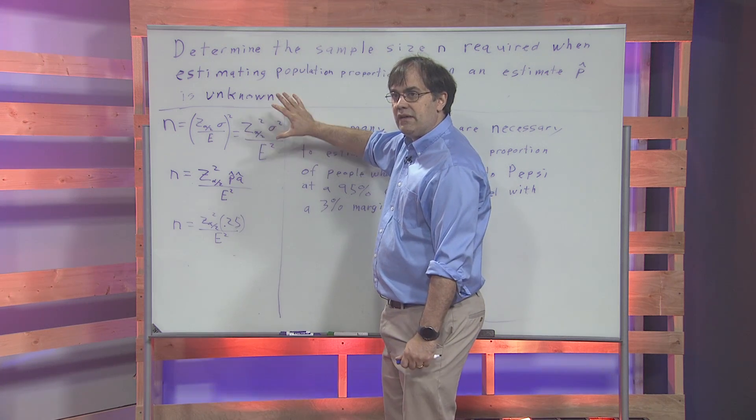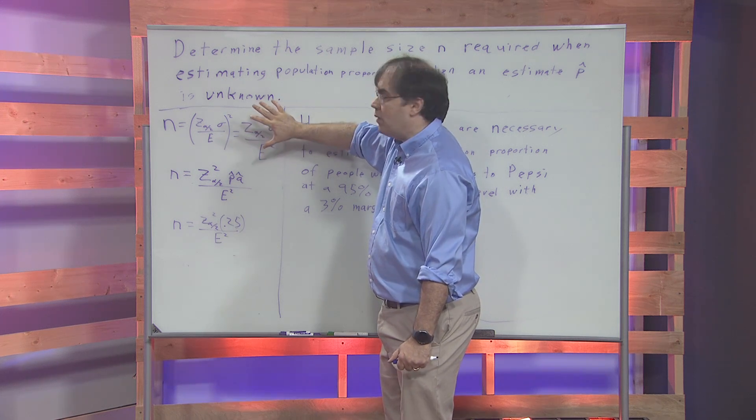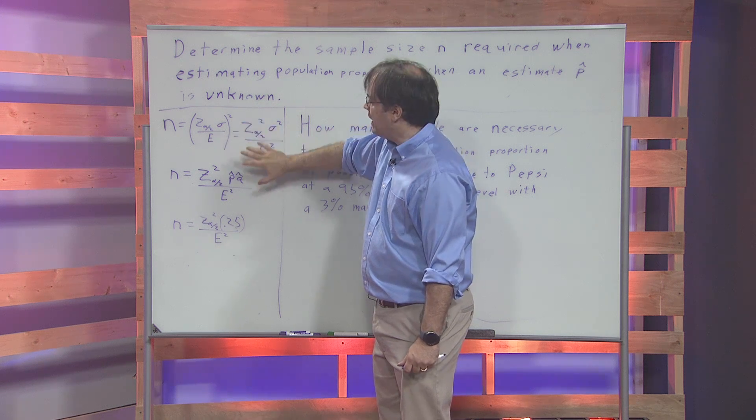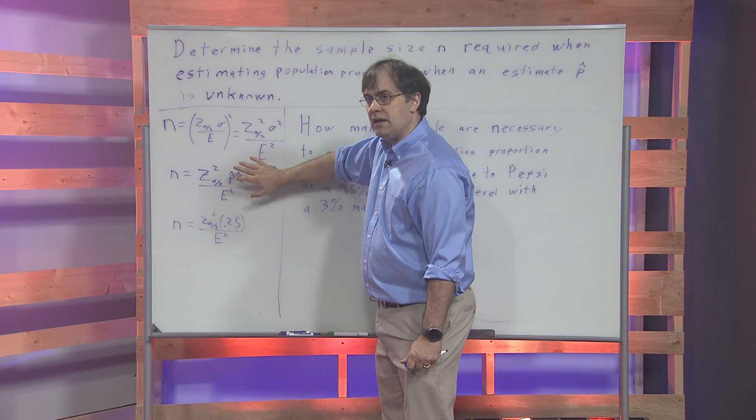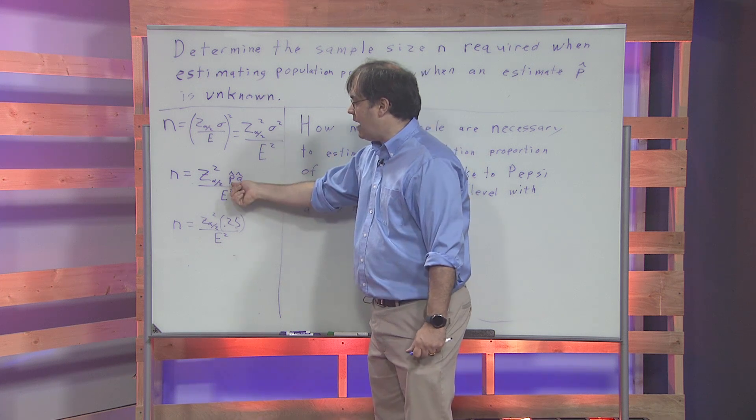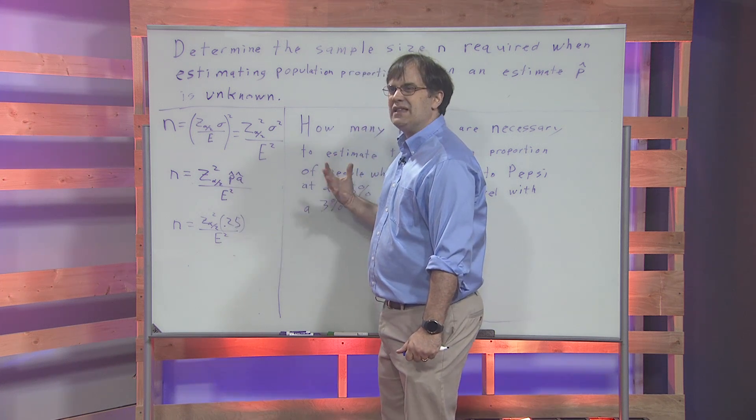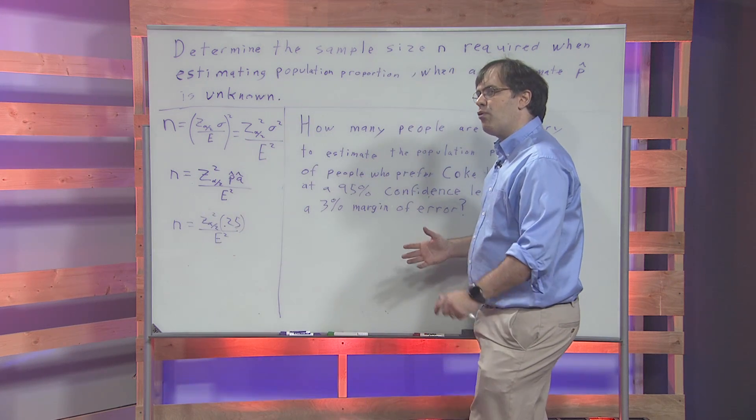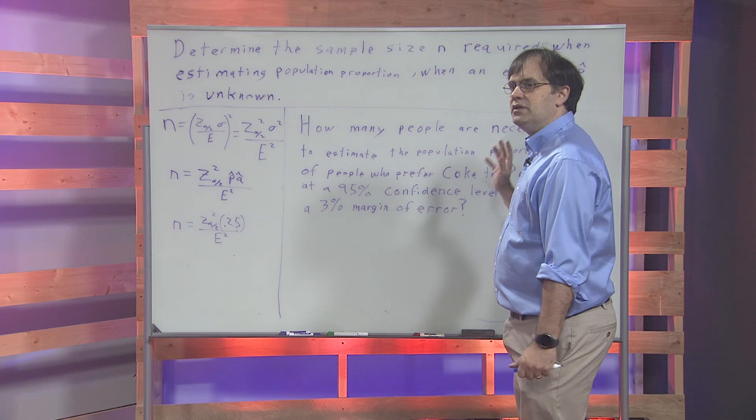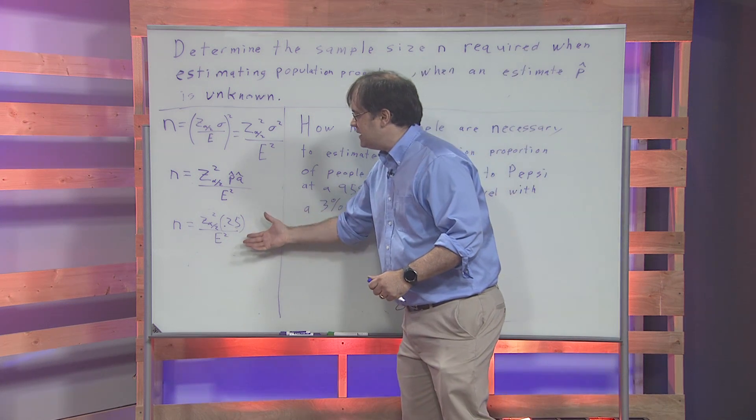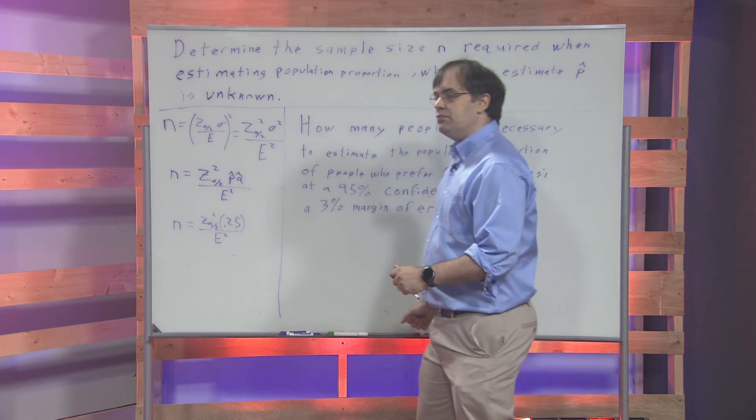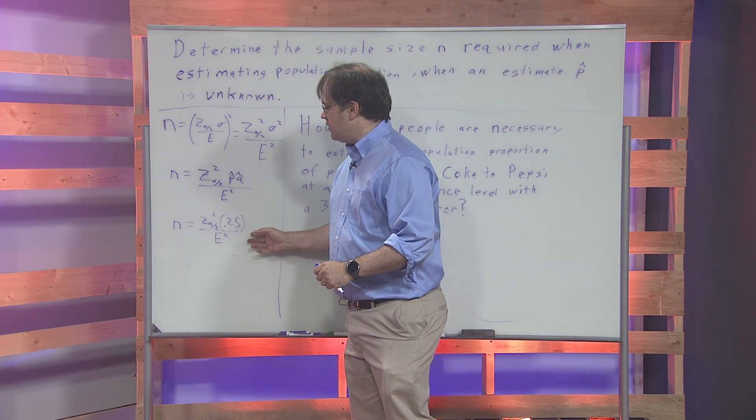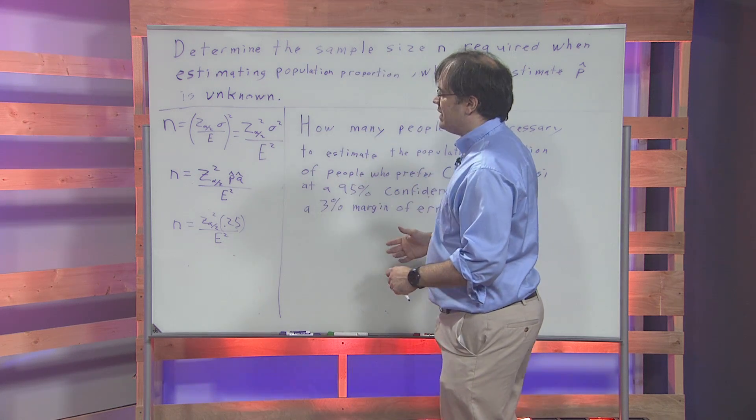This first formula, if you remember, was the formula that we use when we're estimating the sample size for population means. The second one is for population proportions when you have a previous study giving you some information. This third one is for population proportion when you have no information, no guesses as to what the population proportion is. This is what we're going to use for this problem when we don't have any previous knowledge.